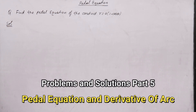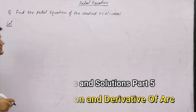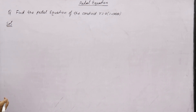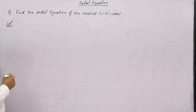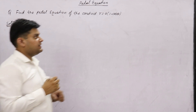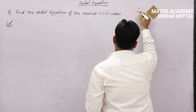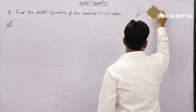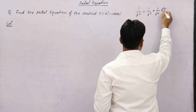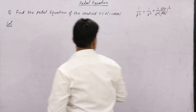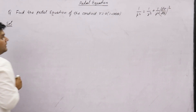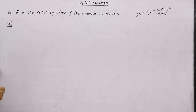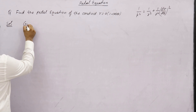Find the pedal equation of the cardioid r = a(1 - cos θ). To find the pedal equation in polar form, we will use the formula: 1/p² = 1/r² + (1/r⁴)(dr/dθ)². With the help of this equation, we will find the pedal equation. Let us begin.